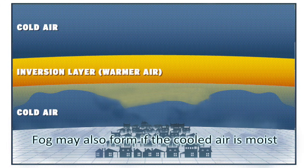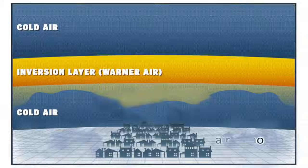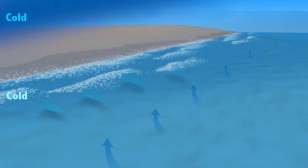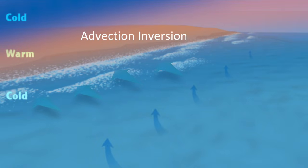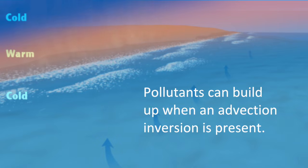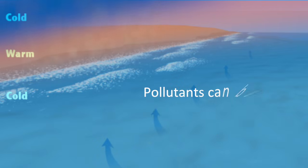Fog may also form if the cooled air is moist. On coasts, a cool ocean breeze can bring cool air onto land. This creates an advection inversion and is very common along much of the California coast. Because the air doesn't mix with other air, pollutants can build up when an advection inversion is present.